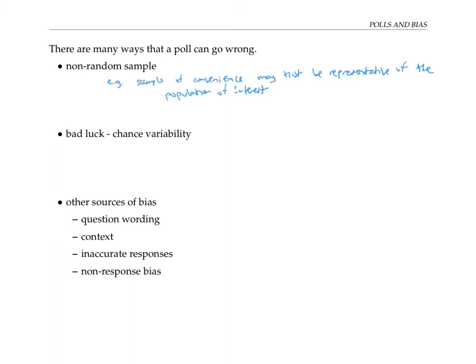Another way that a poll could possibly go wrong is just bad luck — chance variability. Even if you use a random sample that should in theory represent the whole population, you could just happen to have picked too many Trump supporters. We'll talk about chance variability later and see that with a decently large sample, chance variability is minimal. Instead, the biggest problems — the main reasons why polls and samples fail to be accurate — are due to other forms of bias, such as question wording, context, inaccurate responses, and non-response bias.